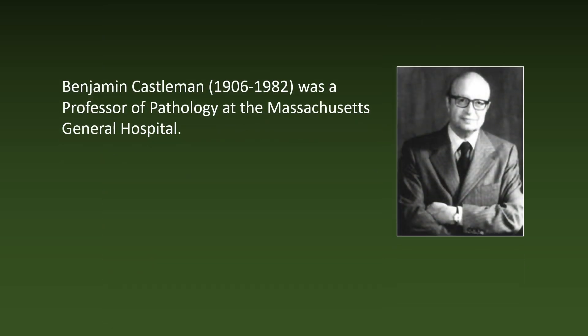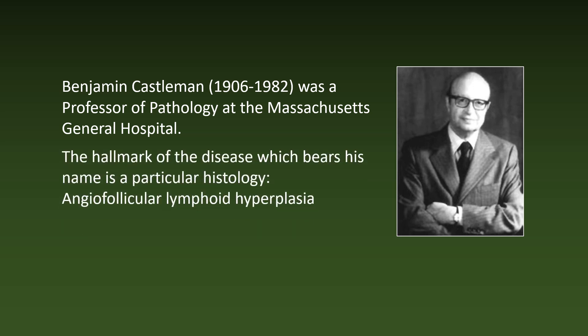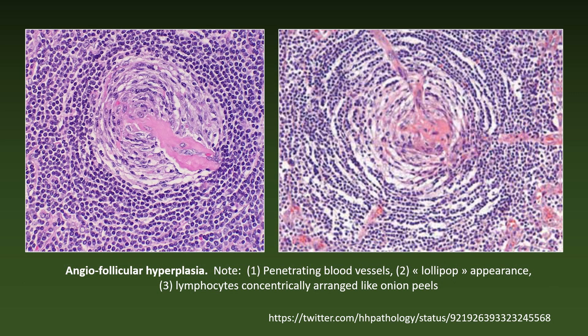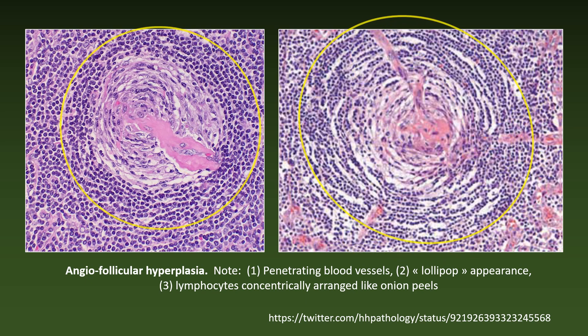Benjamin Castleman, 1906 to 1982, was a professor of pathology at the Massachusetts General Hospital. The hallmark of the disease which bears his name is a particular histology: angiofollicular lymphoid hyperplasia. Note the penetrating blood vessels with a lollipop appearance and the lymphocytes, which are concentrically arranged like onion peels.